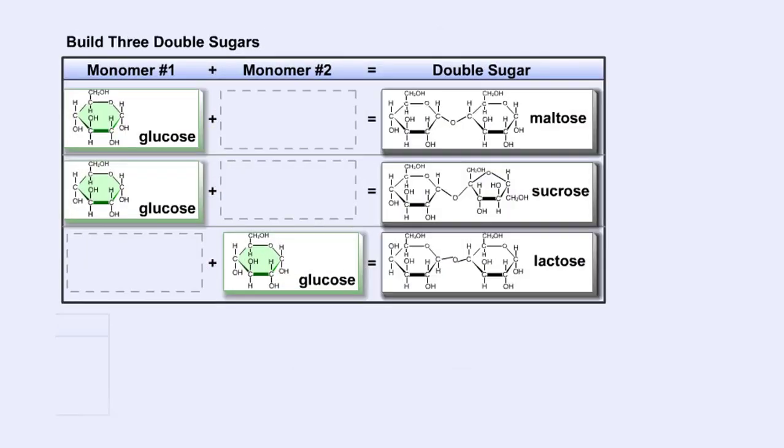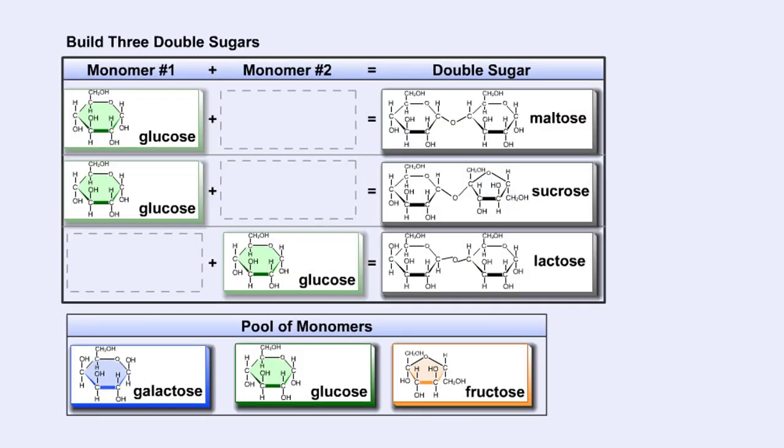Look at the table provided. Notice that all three disaccharides have glucose as one of their building blocks. From the pool of monosaccharides, identify the second building block for maltose, sucrose, and lactose.